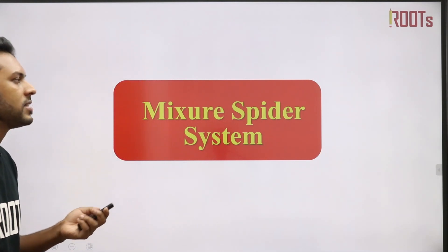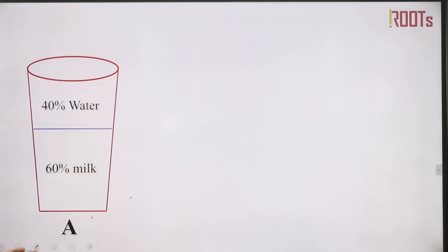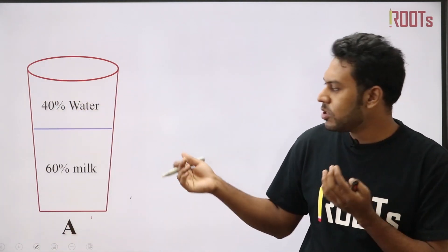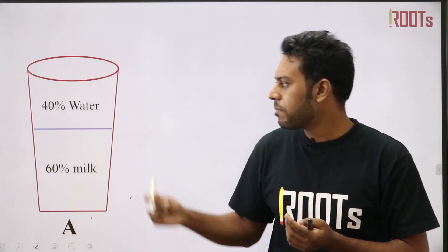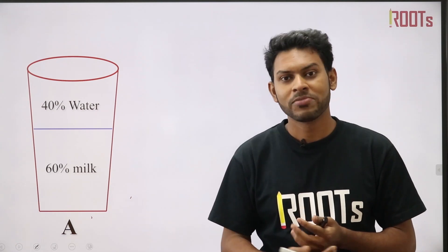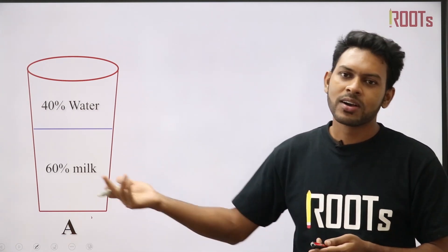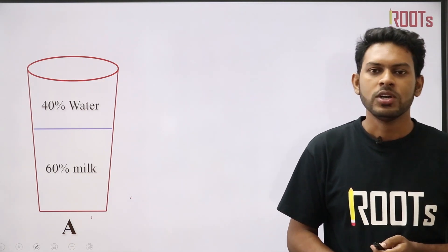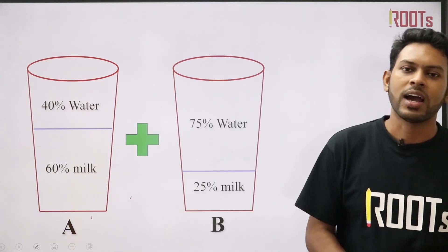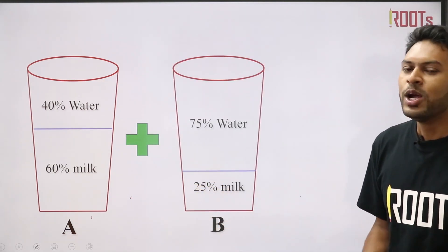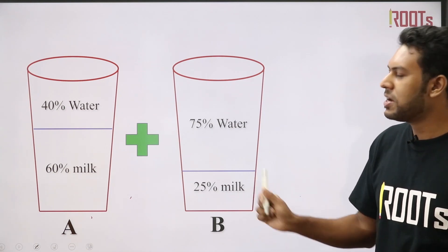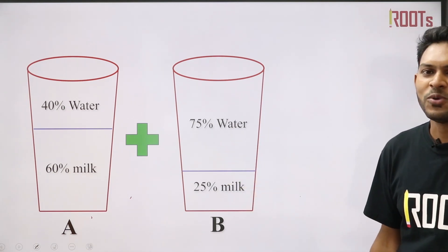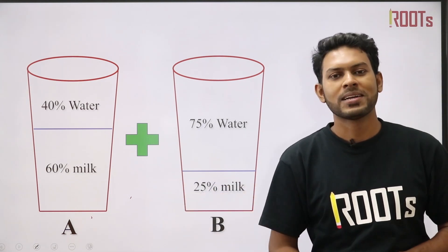In the first example, we will learn about mixtures. You have a mixture with 40% water. The second container has 75% milk or 75% water. These two are mixed together in some ratio.